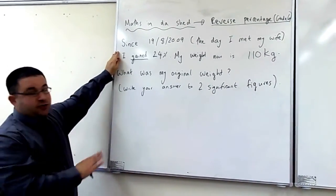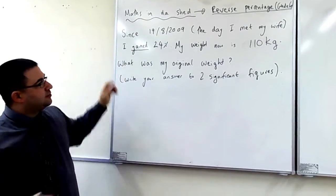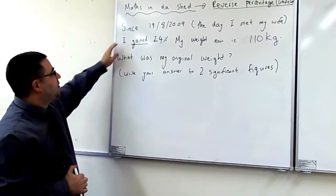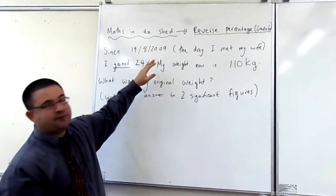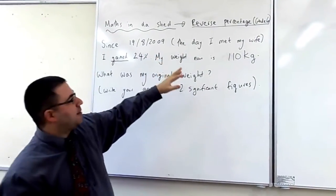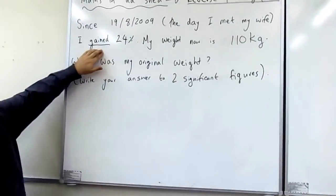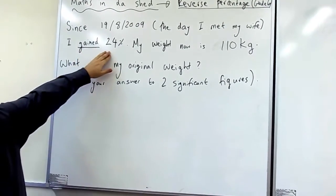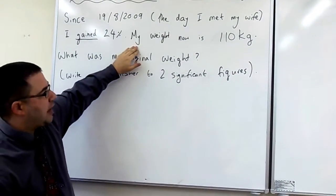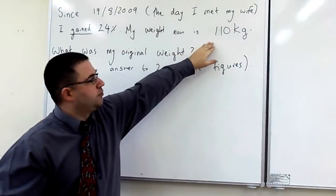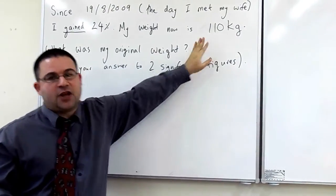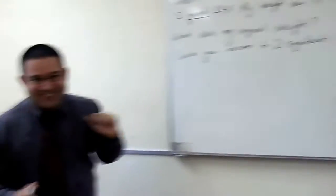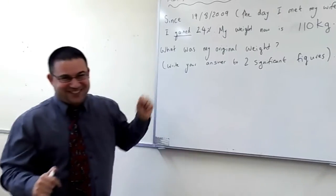This is a true story and it's a little bit painful. I'll go through it with you. Since the 19th of August 2009, the day I met my wife, I gained — that's a key word here — I've gained 24%. My weight now, what's my weight now? 110 kilos. I always said it was a true story. It is. I've got my weight now.